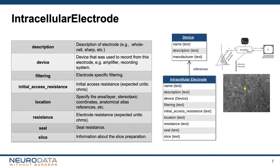Now I'm going to take you through the properties associated with these new neurodata types, and then we will look at some code examples to see how they are used. We begin with intracellular electrodes. This data type includes metadata for the recording preparation, such as any filtering that was applied to the signal, initial access electrode and seal resistances, location data for the recorded cell, and any relevant information about the slice preparation. In addition, this type contains a reference to a recording device object with its associated metadata.